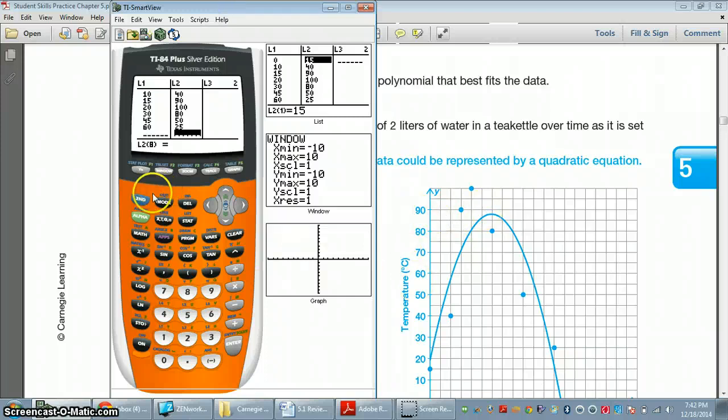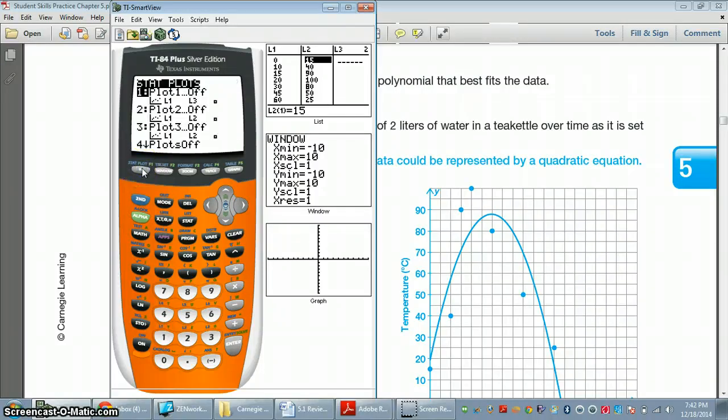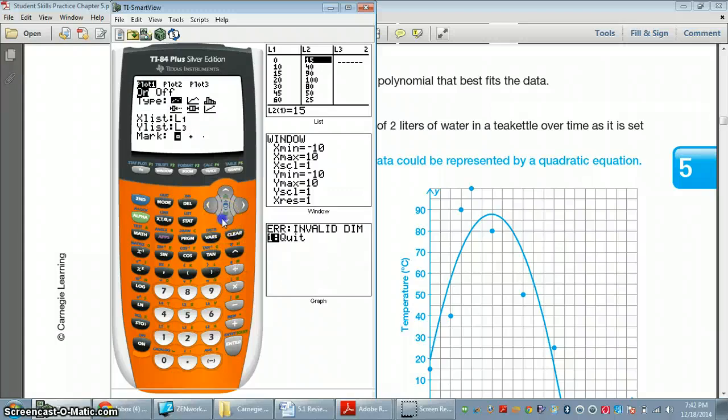Earlier in the year, we talked about making a scatter plot in our calculator. So this is just a review. If you go to 2nd, y equals, notice it says stat plot. And it says plot 1 right here. You just click number 1. You're going to turn it on, so you have to have the on highlighted. This first one represents a graph, a scatter plot. So you arrow through all of those if you want to change it. Our x list was in list 1.